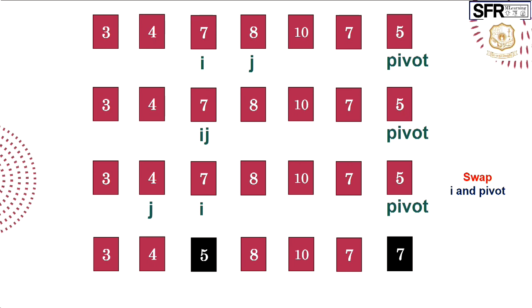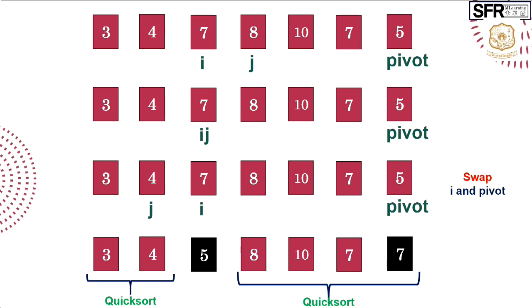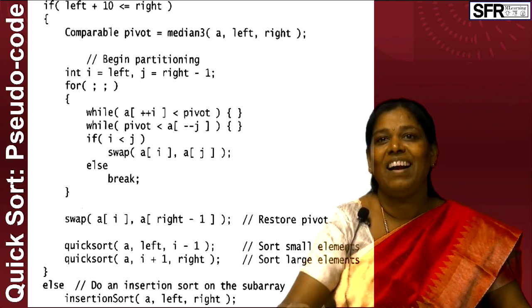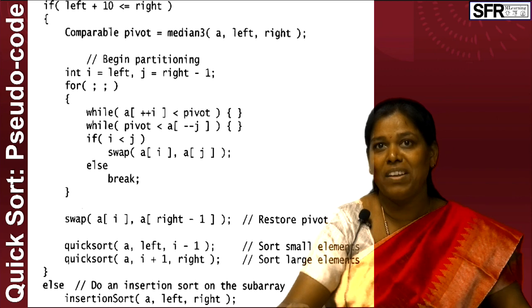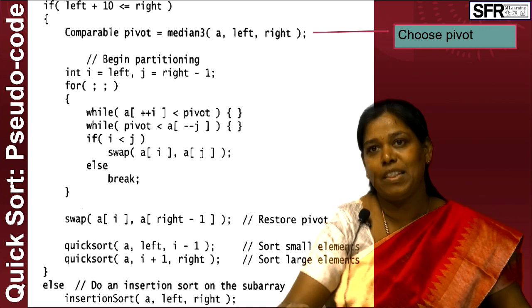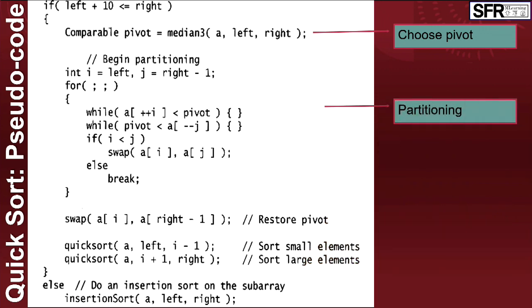The first level of partition is over. Check the list closely: the pivot is 5, and to the left we have only smaller elements 3 and 4, and on the right we have the larger elements 8, 10, 7, and 7. We then apply quicksort on the left list separately and on the right list separately to get the final sorted list. To recall: step 1 is choosing the pivot, step 2 is moving the pointers to implement partitioning, and step 3 is recursive application of quicksort over the divided sublists.